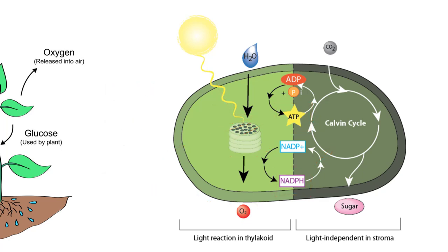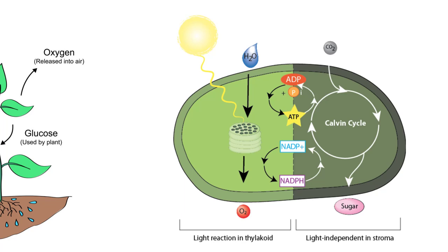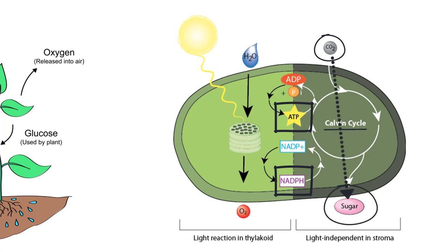The next part of this process is called the light-independent reactions because sunlight is no longer required for these steps to occur, though now we do need carbon dioxide. The high-energy-carrying molecules created from the light-dependent reactions are used in the Calvin cycle to turn carbon dioxide into sugar. The carbon from carbon dioxide that the plant gets from the atmosphere are converted into stable sugar molecules. This process has many steps that we are going to skip in this video, but the end result here is a complete glucose molecule.